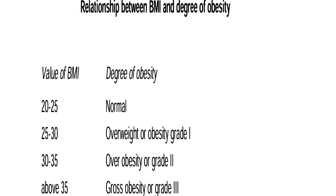Normal persons have a BMI in the range of 22 to 25. When it is above 25 and up to 30 — that is 25 to 30 — it is obesity grade 1. 30 to 35 is obesity grade 2. And when it is more than 35, it is classified as grade 3, or gross obesity.